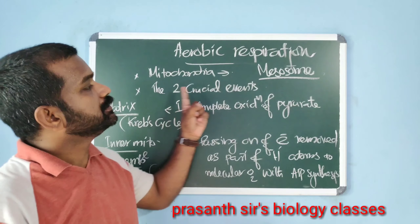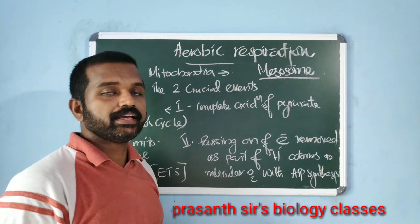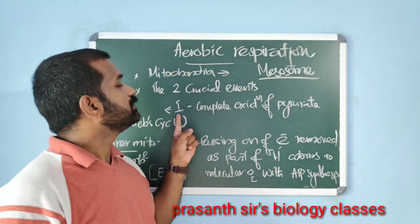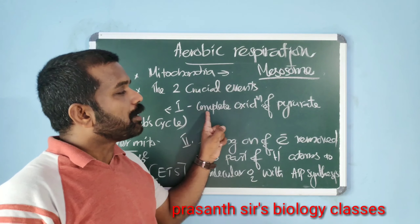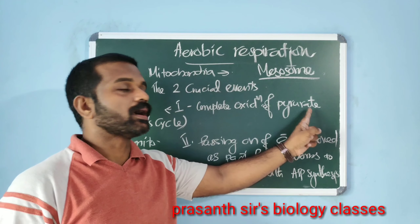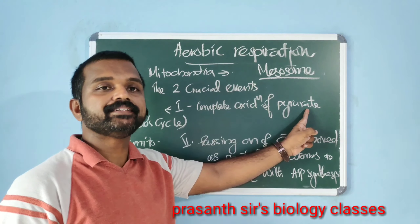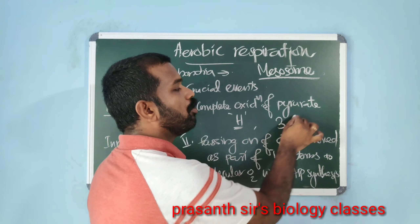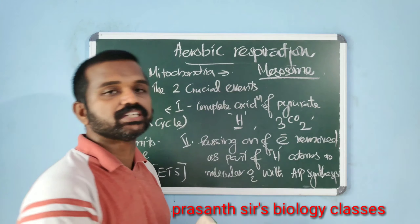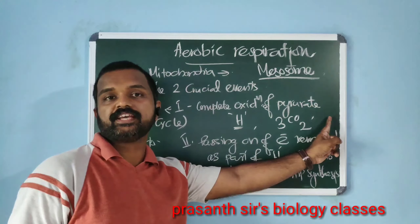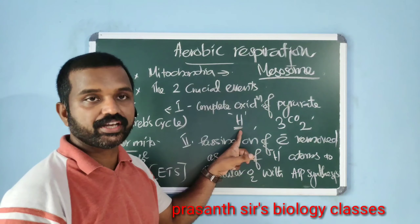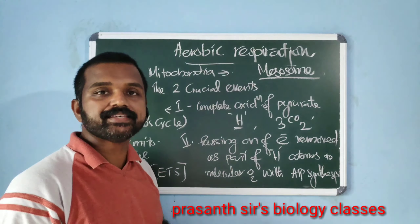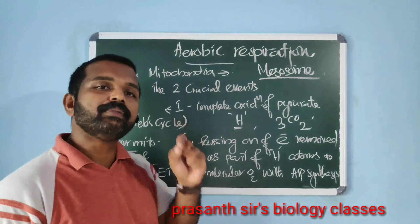The two crucial events in aerobic respiration: Event one is the Krebs cycle, that is complete oxidation of pyruvate through the stepwise removal of hydrogen atoms, leaving three molecules of carbon dioxide. This event takes place in the mitochondrial matrix.